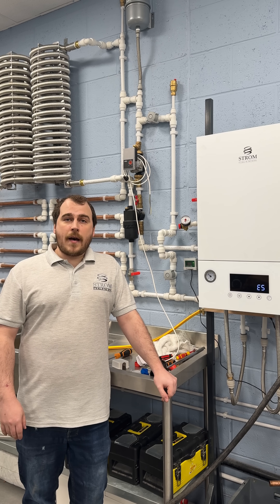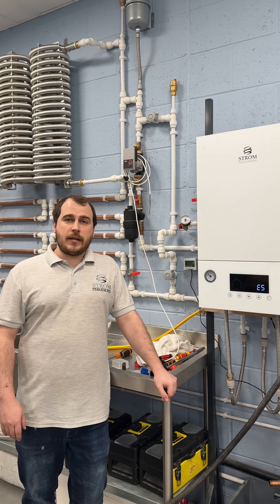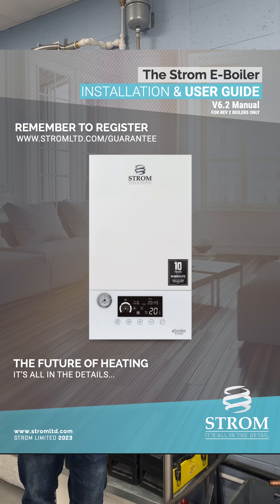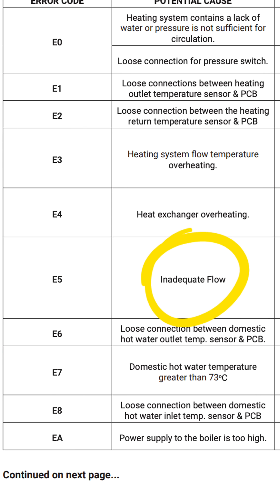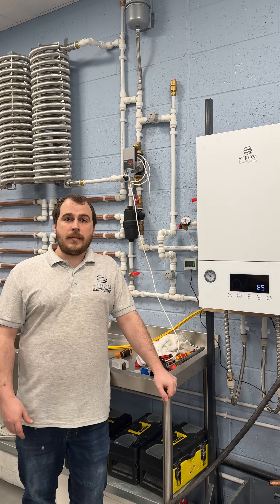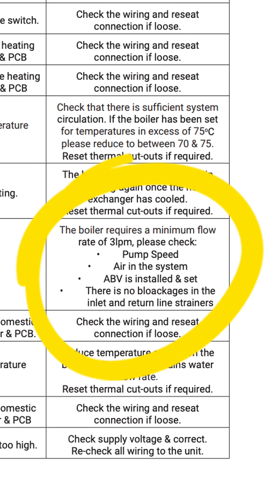The E5 error code will trigger when the boiler recognises that the system flow is below 3 litres per minute. Things that can contribute to this are things like air in the system, sediment, debris, and valves that are slightly shut.